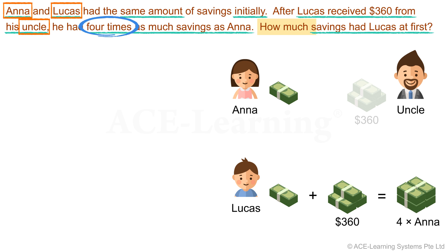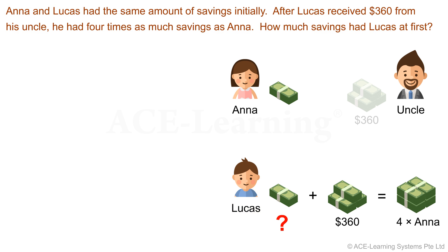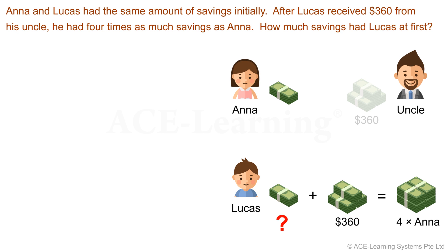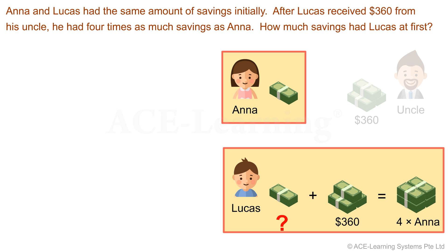We are to find the amount of savings Lucas had at first. Now that you have understood the problem, let's proceed to Step 2: Devise a plan — choose a suitable method based on the relationships among known and unknown quantities. From our diagram, we can see that there is a comparison of two quantities: Anna's and Lucas's savings. We can draw a comparison model to illustrate the relationship between these two quantities and use it to solve the problem.